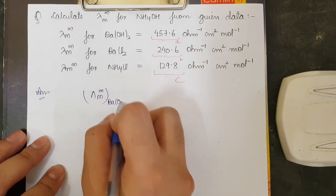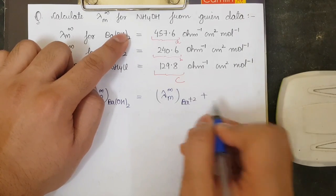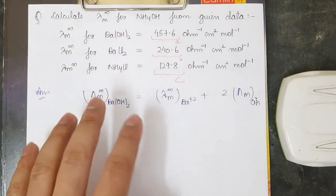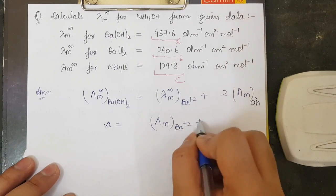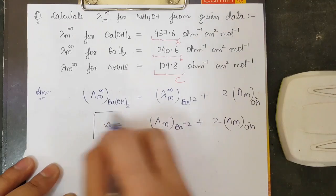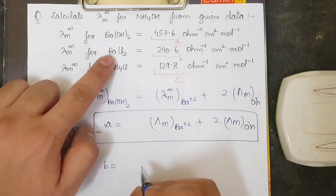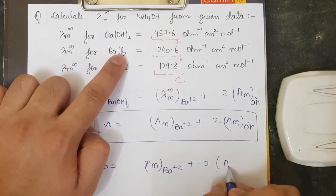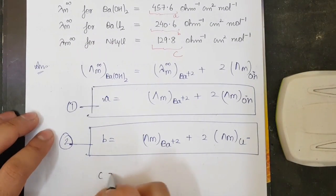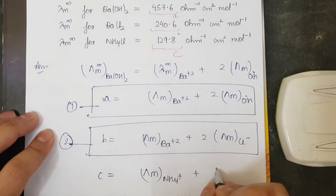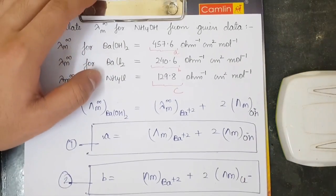Breaking down the given data: Equation 1 — λm∞ of Ba(OH)2 = λm∞(Ba²⁺) + 2 × λm∞(OH⁻), let this equal A. Equation 2 — λm∞ of BaCl2 = λm∞(Ba²⁺) + 2 × λm∞(Cl⁻), let this equal B. Equation 3 — λm∞ of NH4Cl = λm∞(NH4⁺) + λm∞(Cl⁻), let this equal C. We now have three equations A, B, and C written.